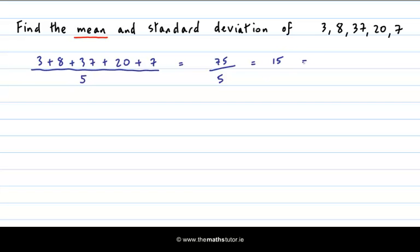We label this x̄ or you will sometimes see it labelled as μ. So these two here are two different symbols that you will see for the mean: x̄ or μ.